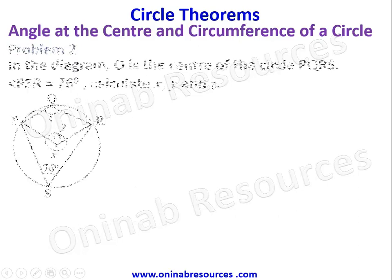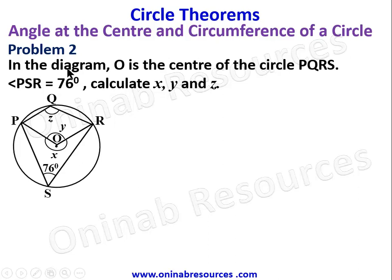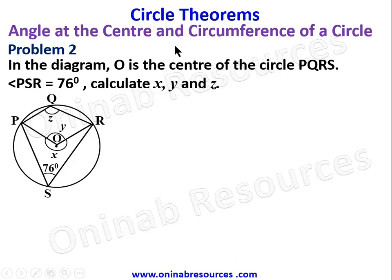For problem two, O is the center of circle PQRS. Angle PSR is 76 degrees. Calculate x, y, and z. Studying the diagram carefully, we have two angles at the circumference on opposite sides of the circle and two angles at the center. We need to identify which angles are related to one another with respect to the theorem.